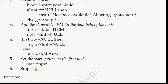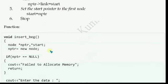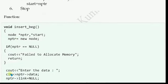Then: set the start pointer to the first node. Now start should point to the new node, so we write: start = nptr. This means the new node is now the starting node, and the previous first node becomes the second node.